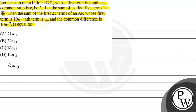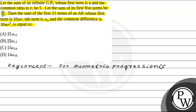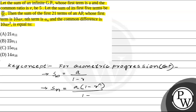In this question, we are going to use the key concept for geometric progression. The sum of infinite terms, denoted by S infinity, is calculated using the formula A divided by 1 minus R, where A is the first term and R is the common ratio. The sum of N terms of a GP is calculated as A times 1 minus R to the power N, divided by 1 minus R.